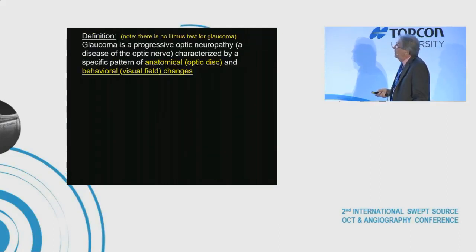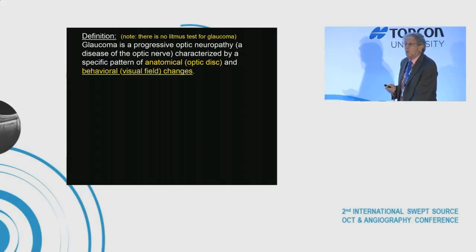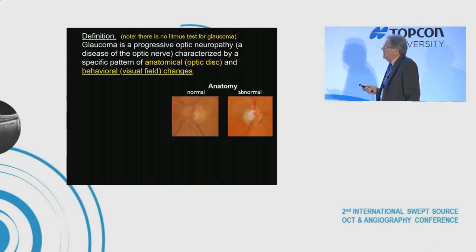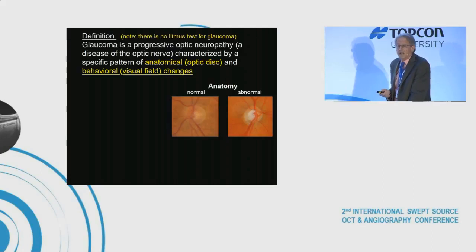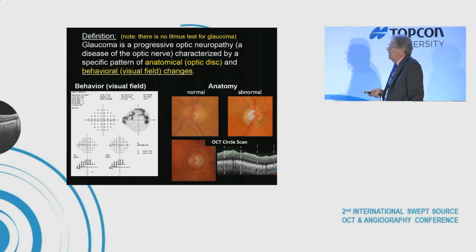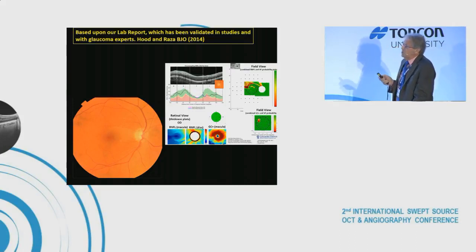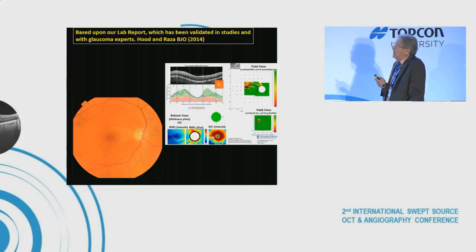There is no litmus test, no gold standard for detecting glaucoma. It's defined as a progressive optic neuropathy, and most glaucoma specialists look for both anatomical and behavioral changes. For anatomy, you have the fundus exam augmented with photos and OCT. For behavior, you have the visual field — usually a 24-2 or 30-2.